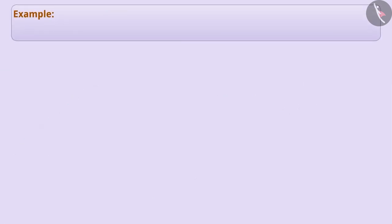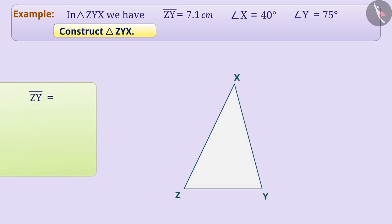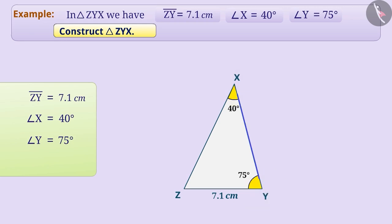Next example: In triangle ZYX, we have ZY equal to 7.1 cm, angle X equal to 40 degrees and angle Y equal to 75 degrees. Construct triangle ZYX. Here, XY is the side included between angle X and angle Y of triangle ZYX, and we are not given the length of side XY. To construct a triangle, it is important to know the length of the side included between the angles.